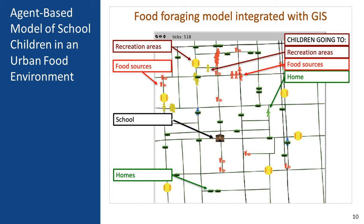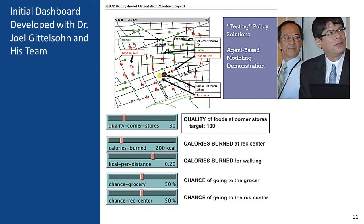Here I show a snapshot of an agent-based model, where simulated individuals interact in an environment. The purpose is to find out how the environment influences the health of the children. The individuals are school-age children and the environment is inner-city Baltimore — you can see a map with food sources, streets, recreational areas, the school, and some homes. The model also has a dashboard with five sliders. The first is about the quality of corner stores, referring to the healthiness of foods offered.